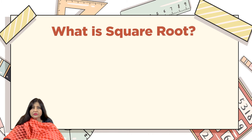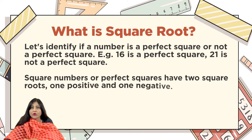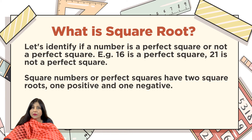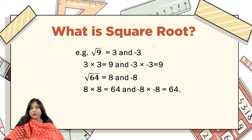Now let's identify if a number is a perfect square or not. For example, 16 is a perfect square but 21 is not. 16 is a perfect square because 4×4=16, but there is no whole number multiplied by itself that gives 21. Square numbers that are perfect squares have two square roots — one positive and one negative.